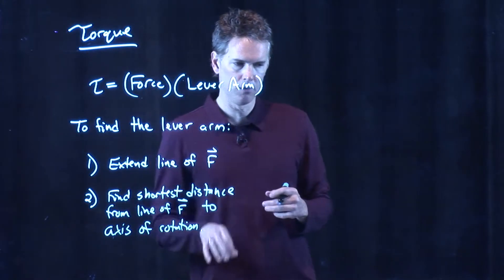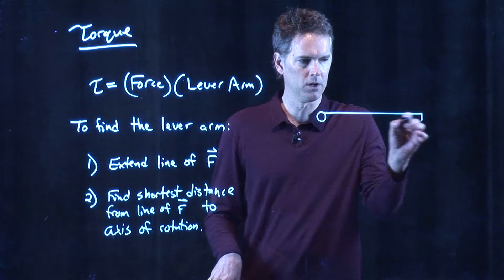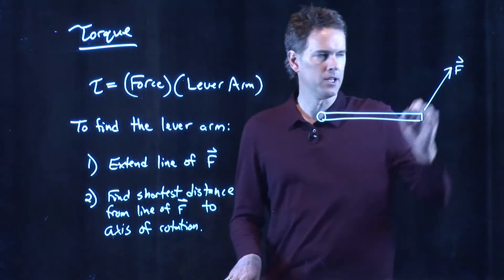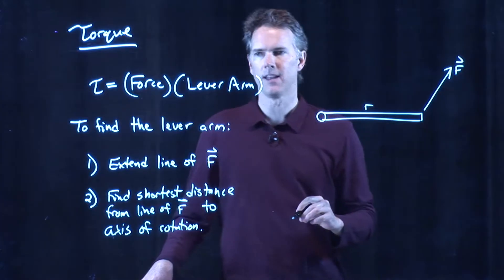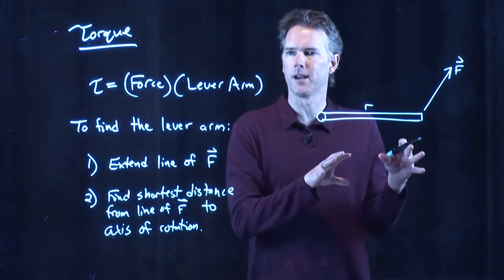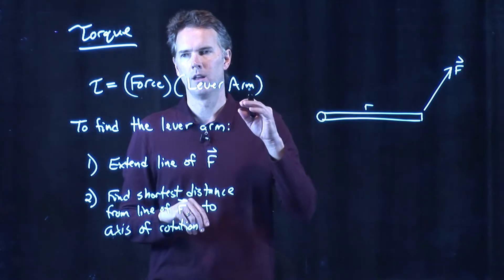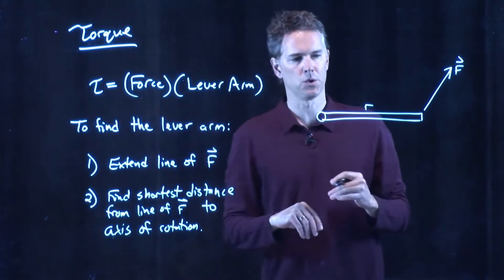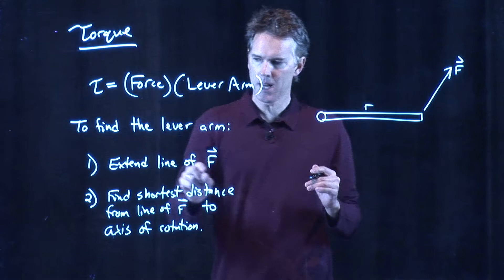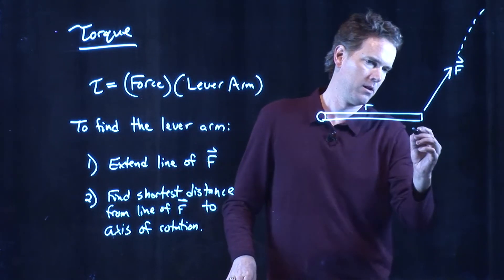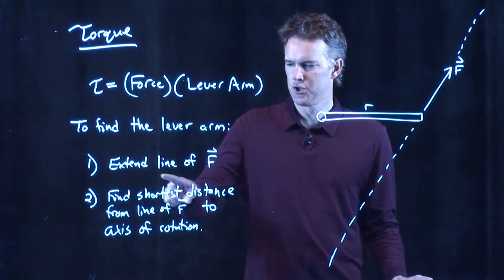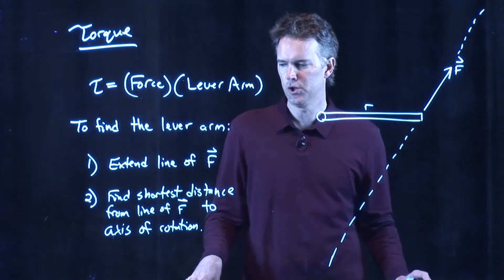Let's see if we can do this with the problem we had a little bit ago, which was opening the door. We said we're going to apply a force in that direction, and R is right there — that's the length of the door. If we want to calculate the torque in this case, we could do our cross product approach, or we could do this approach. Let's find the lever arm, and then calculate the torque based on that lever arm. Step one: extend the line of force. We just draw a dashed line — that's our line of force.